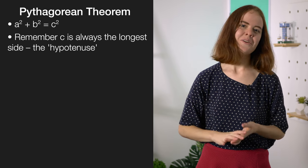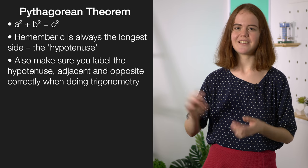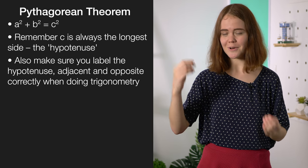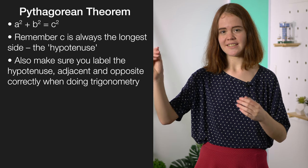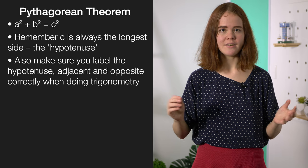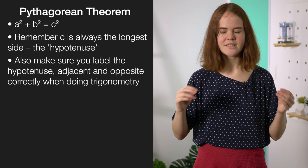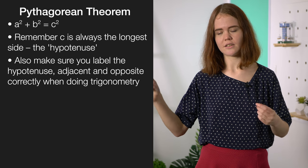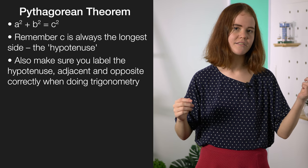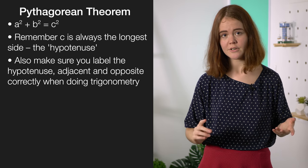When doing trig, you also want to make sure that you've labelled all your sides correctly — label your hypotenuse clearly and label the adjacent and opposite relative to the angle you're using. This is also where a little bit of algebra skill comes into play, because you want to be really confident rearranging to find a side or an angle, and remember you'll be using inverse trig if you're solving for an angle.